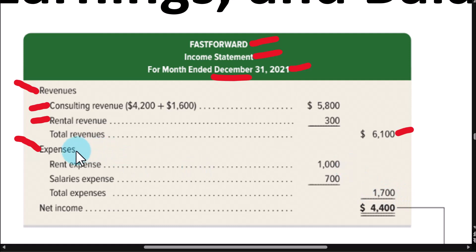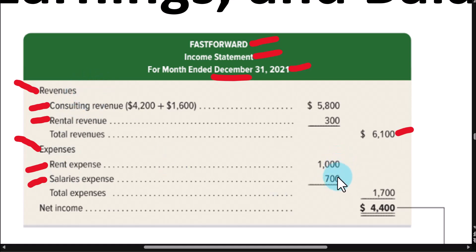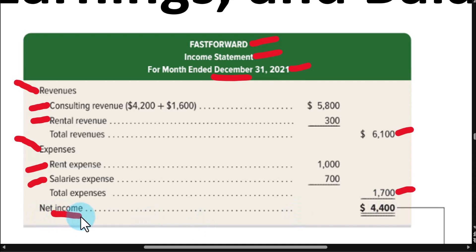The next category is expenses, and we have two different types. Expenses are costs that are used up to earn this revenue. Here are the balances in the expense accounts and the subtotal. We take the difference, and when the revenue is larger than the expenses, that difference is called net income or net profit — sometimes just called profit or income. This tells you the company is profitable and shows the magnitude of the revenue and expenses.